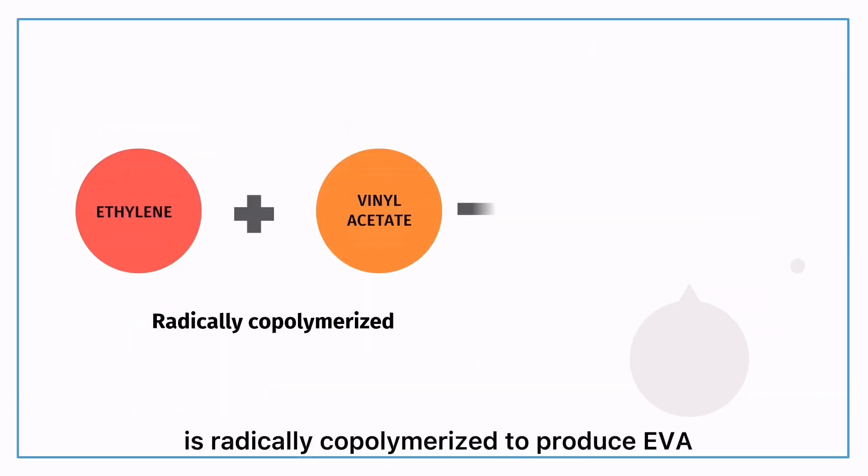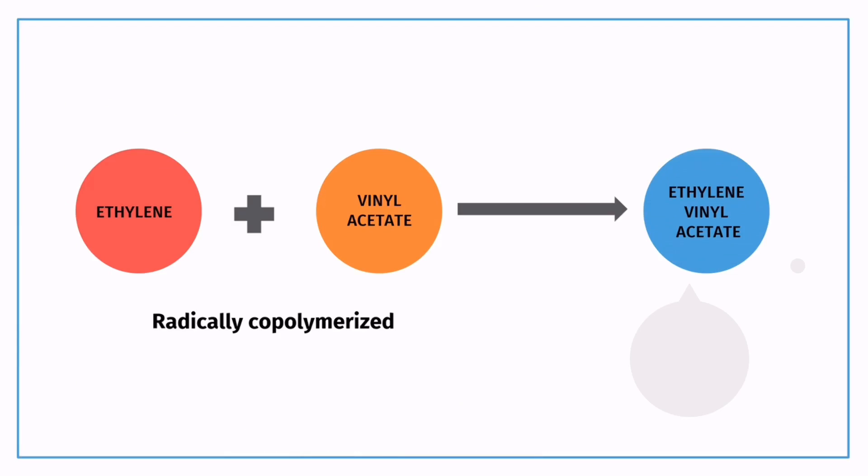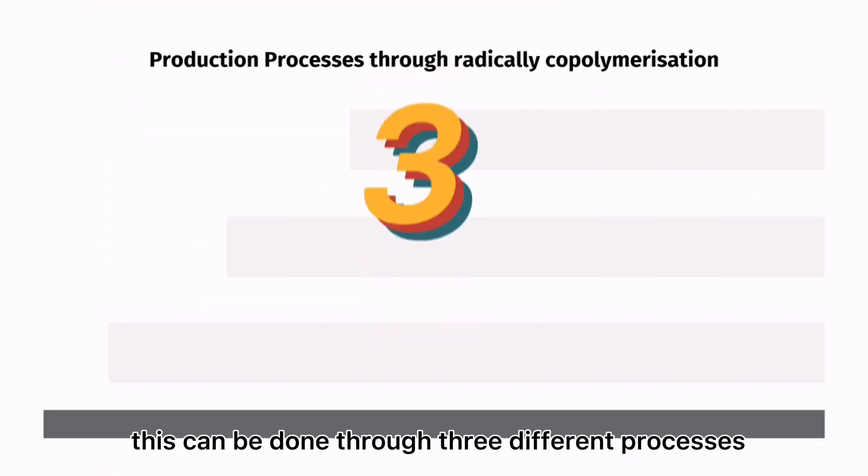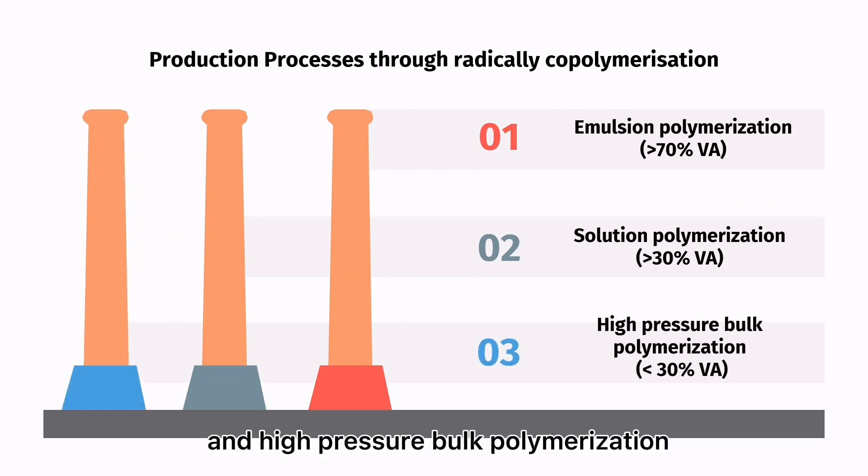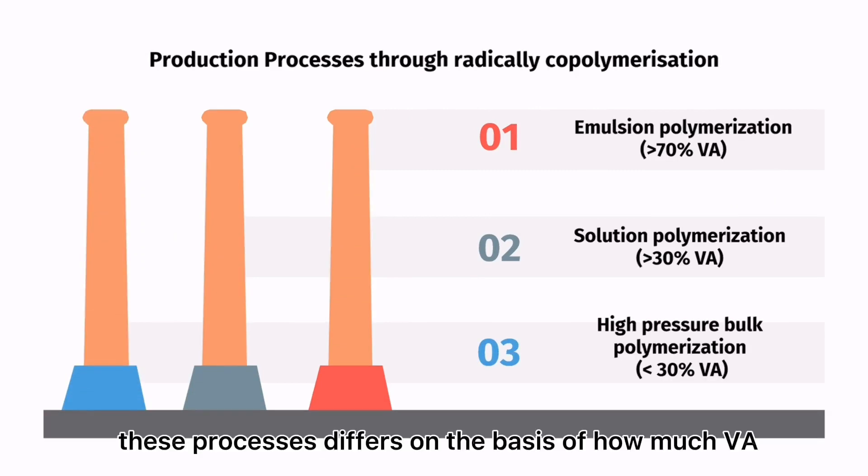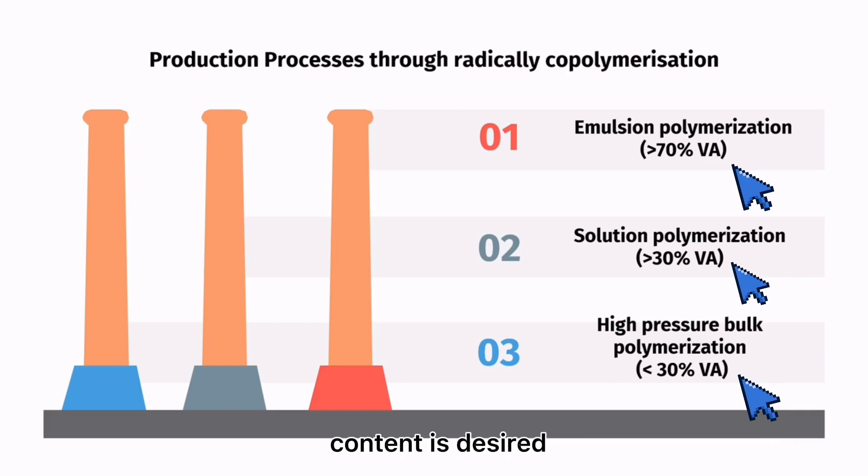Ethylene and vinyl acetate is radically copolymerized to produce EVA. This can be done through three different processes: emulsion polymerization, solution polymerization, and high pressure bulk polymerization. These processes differ on the basis of how much VA content is desired in the EVA.